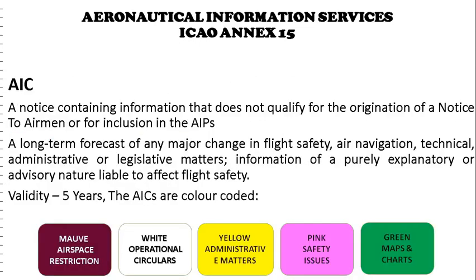Aeronautical Information Circulars (AIC) is a notice containing information that does not qualify for a NOTAM or for inclusion in the AIP, but relates to flight safety, air navigation, or technical, administrative, or legislative matters. AICs lapse after five years but may be reissued if still considered important. AICs are color coded: white means operational circular, yellow pertains to administrative matters including ATC facilities and requirements, pink signals safety issues, green pertains to map and chart information, and mauve indicates amendments and airspace restriction charts.